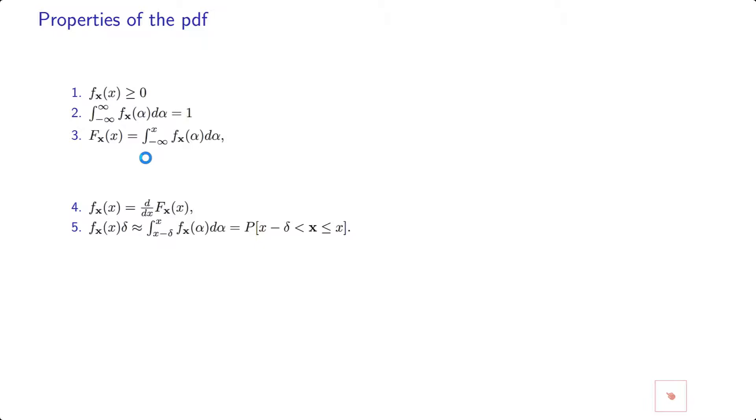Another property is that if you have the pdf, and if you want to calculate probability that your random variable is in this interval between this area, this is the area between x minus delta and x, then obviously, probability of this event is equal to integral from x minus delta to x of f_X of alpha d alpha. This is by definition.